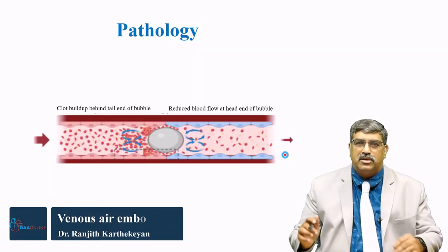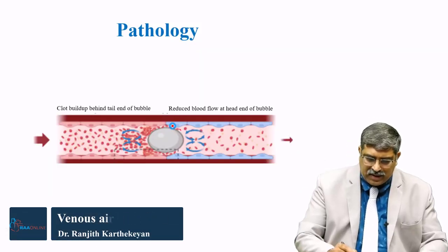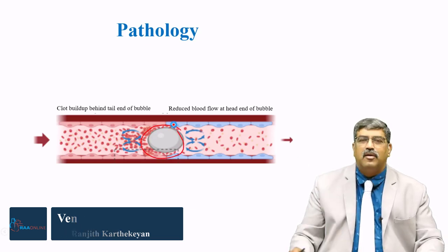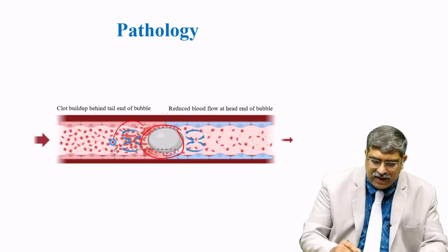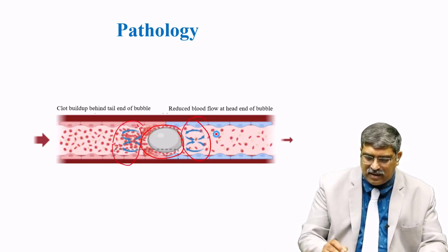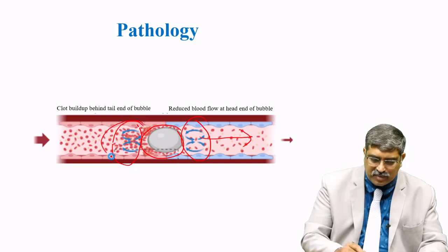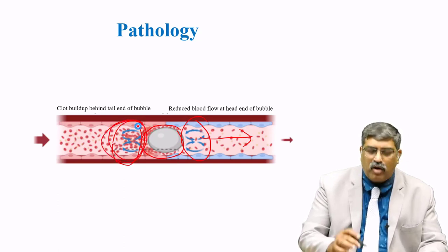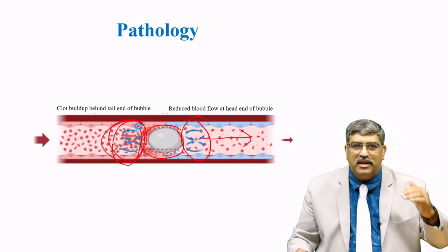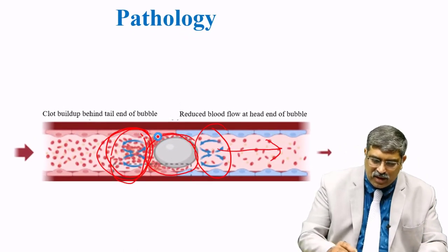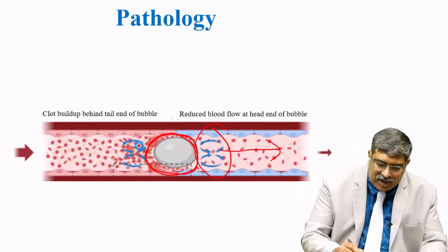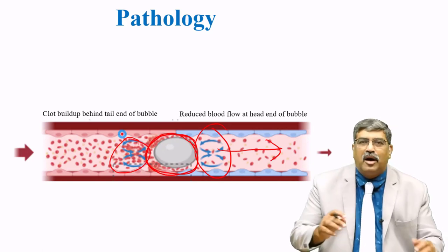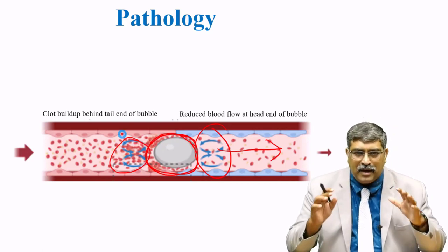Coming to the pathology. As the bubble reaches the vein, your flow of blood in the vein is altered. This is the tail end and this is the head end. The forward flow is decreased and there is an obstruction of flow, and clot formation occurs. This bubble formation slowly increases and forms what is called a Taylor bubble. Here you can see the platelet, fibrin, WBC and RBC getting accumulated.